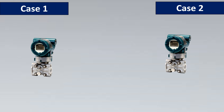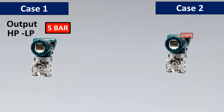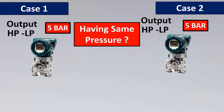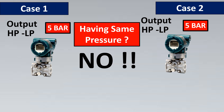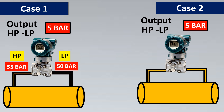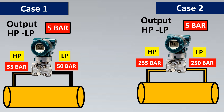Imagine we have two DP transmitters. The first transmitter has an output of 5 bar (HP minus LP), and the second transmitter also has an output of 5 bar (HP minus LP). Are these both experiencing the same pressure? The answer is no. For the first transmitter, the HP side is 55 bar and the LP side is 50 bar, giving 5 bar. For the second transmitter, the HP side is 255 bar and the LP side is 250 bar, also giving 5 bar.